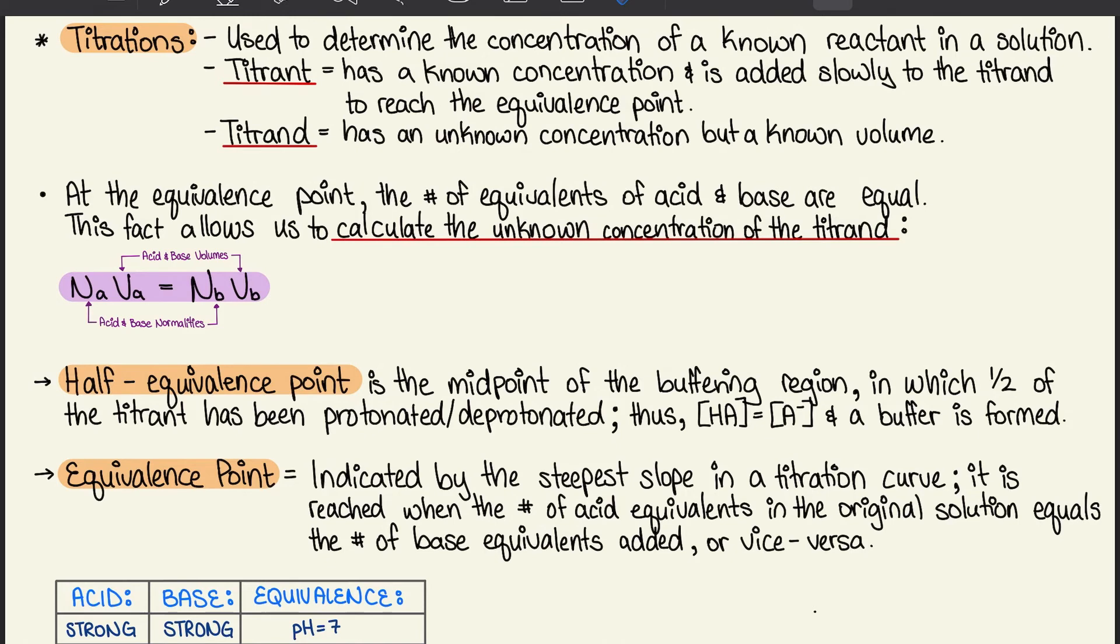At the equivalence point, the number of equivalents of acids and bases are equal. This fact allows us to calculate the unknown concentration of the titrand. We do this with NA times VA equals NB times VB. N is the acid and base normalities, A is for acid, B is for base, and the V values are acid and base volumes.